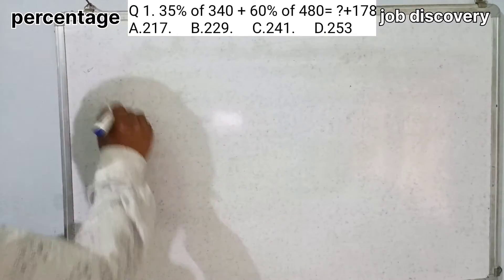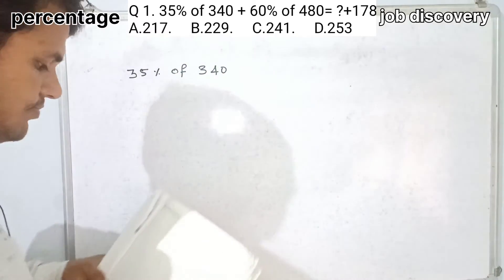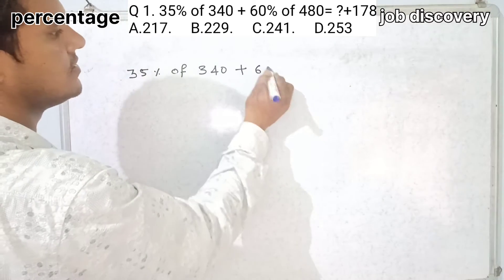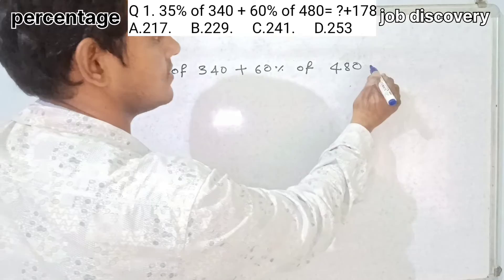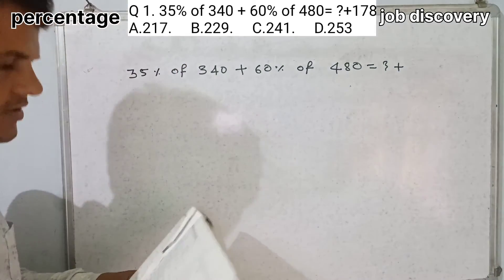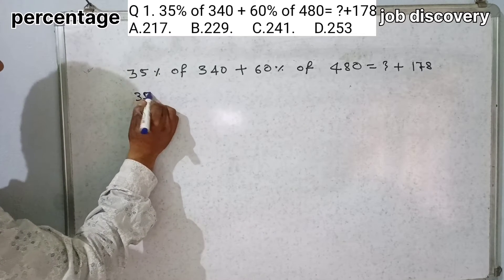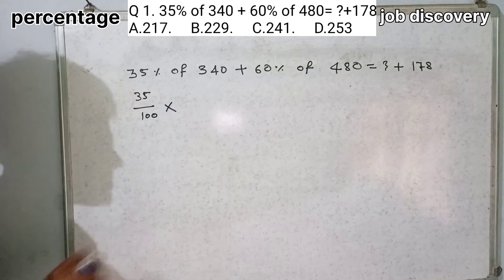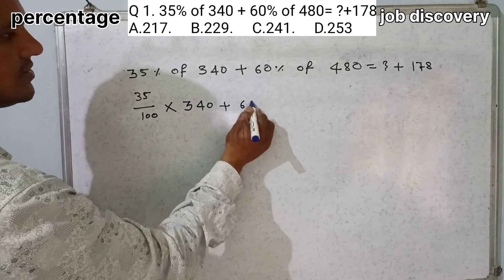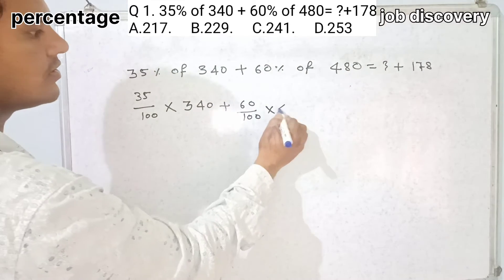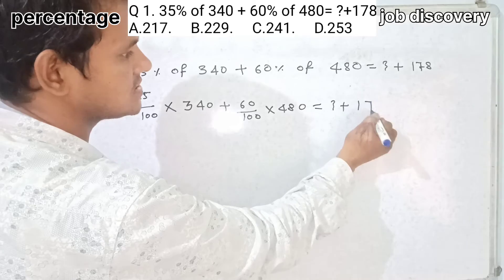35% of 340 plus 60% of 480 is equal to question mark plus 178. 35% means 35 by 100 of 340 plus 60% means 60 by 100 of 480 is equal to question mark plus 178.